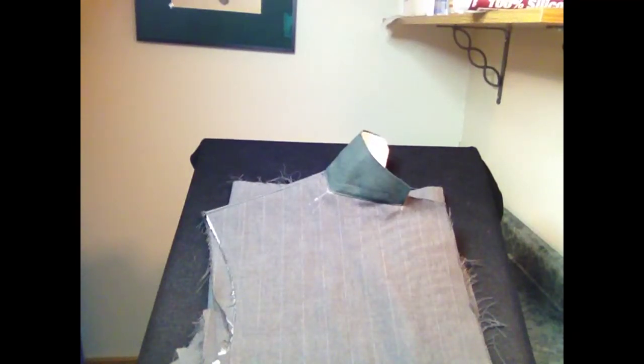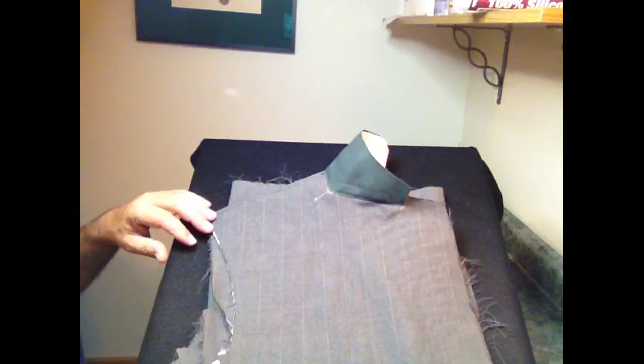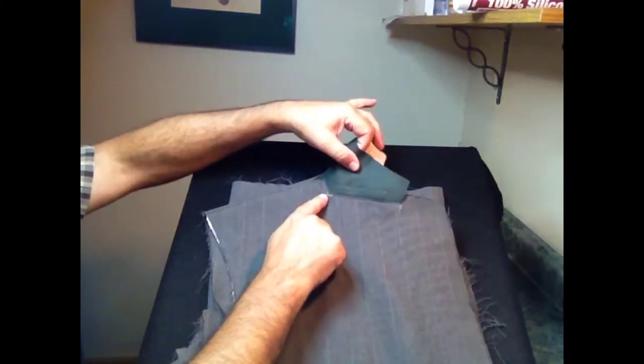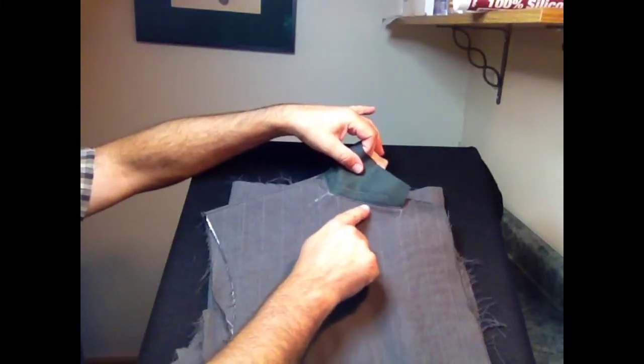This is the way your coat should look after having attached the under collar. It's been pinned and then stitched along that line.